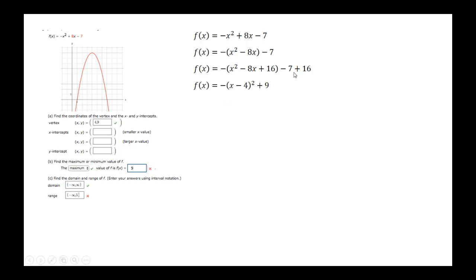Combining the constant terms, we wind up with f(x) equal to the opposite of x minus 4 squared when we factor x squared minus 8x plus 16 and then plus 9.